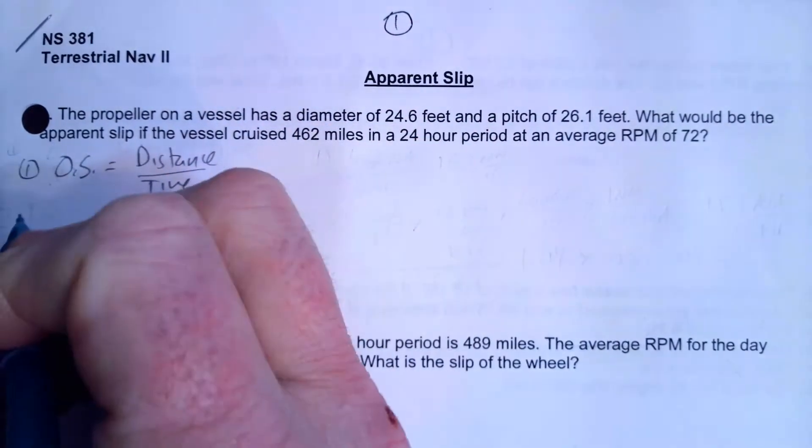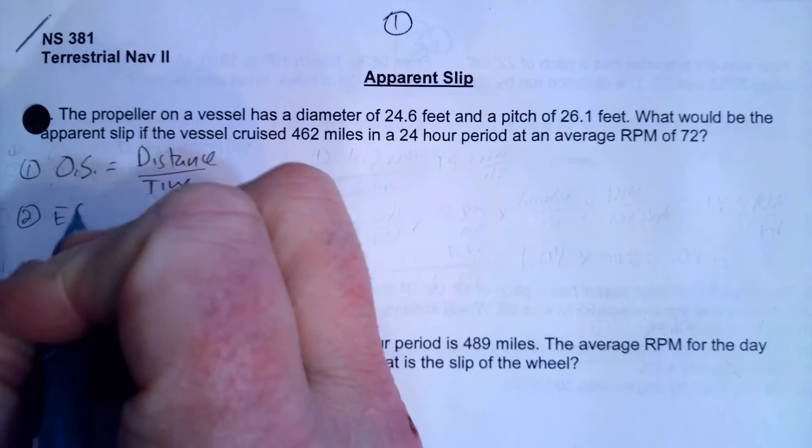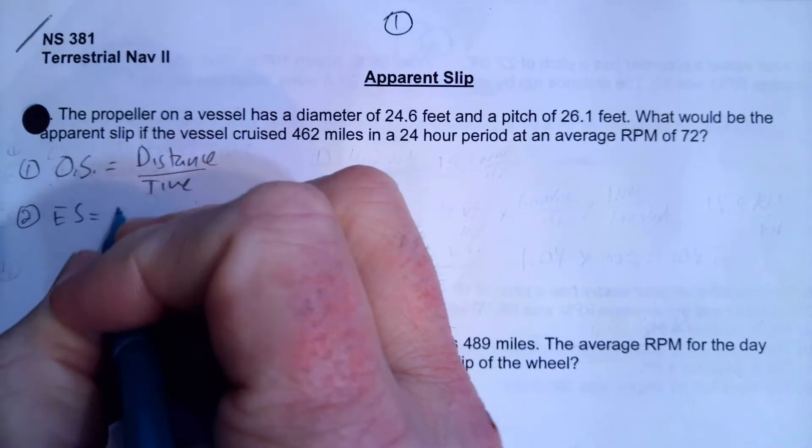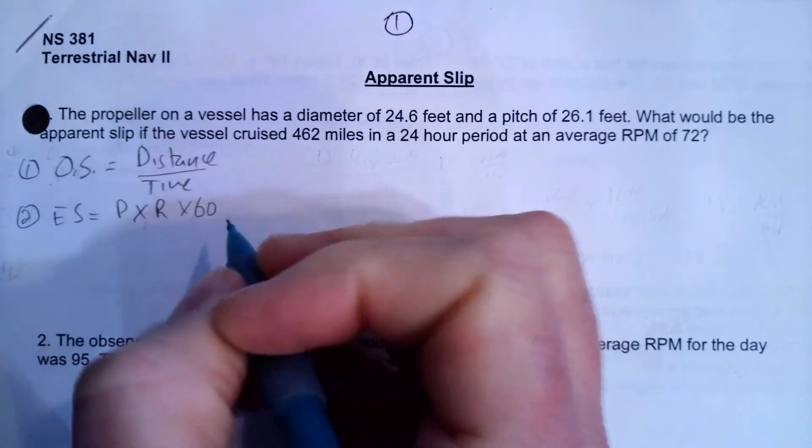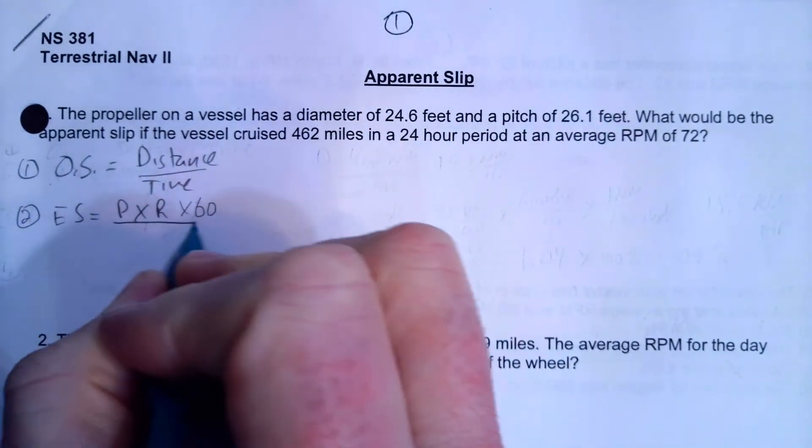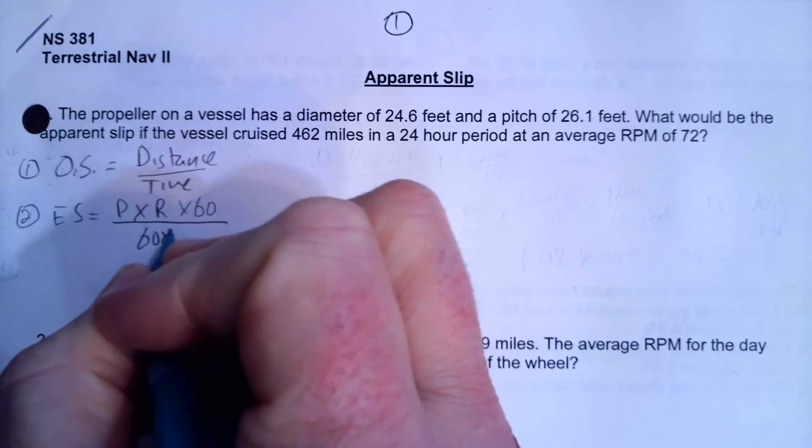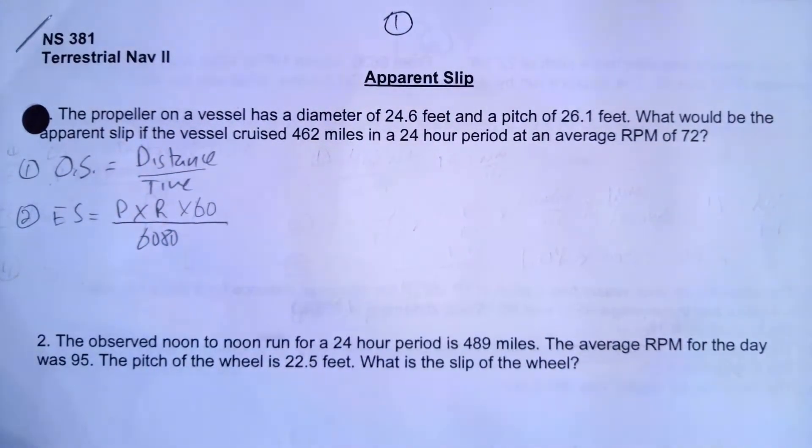Engine speed is going to equal pitch times RPM times 60, now that is a conversion factor from minutes to hours, over 6080, which is a conversion factor from feet to nautical miles.